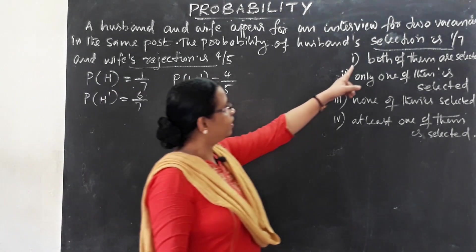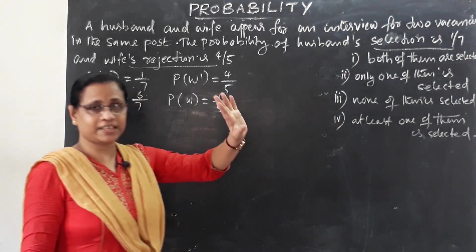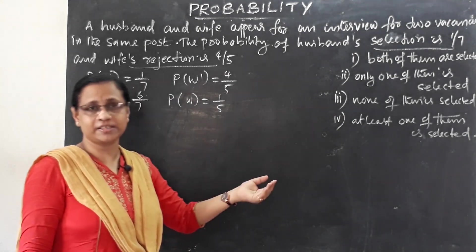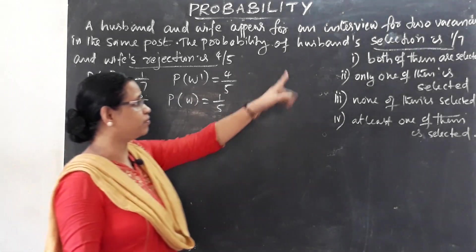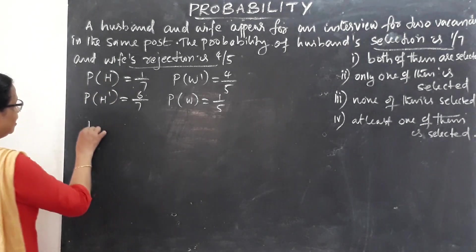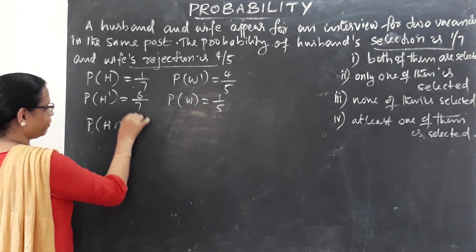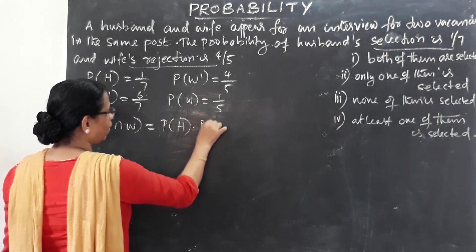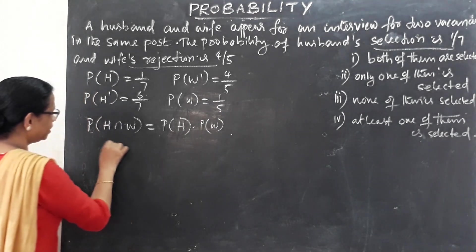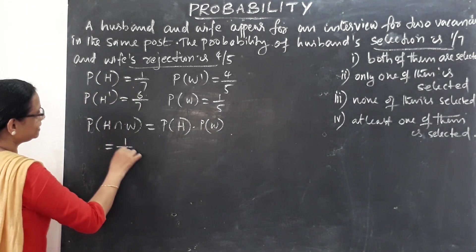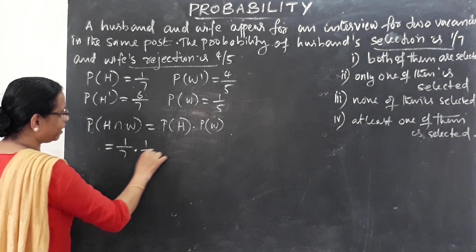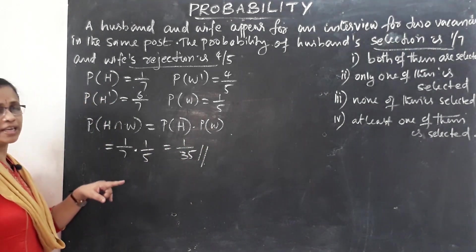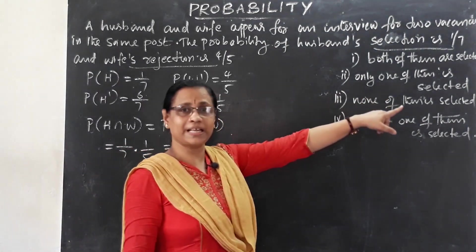First question: find the probability that both of them are selected. The probability of H intersection W equals probability of H into probability of W, which equals 1/7 into 1/5, that is equal to 1/35.